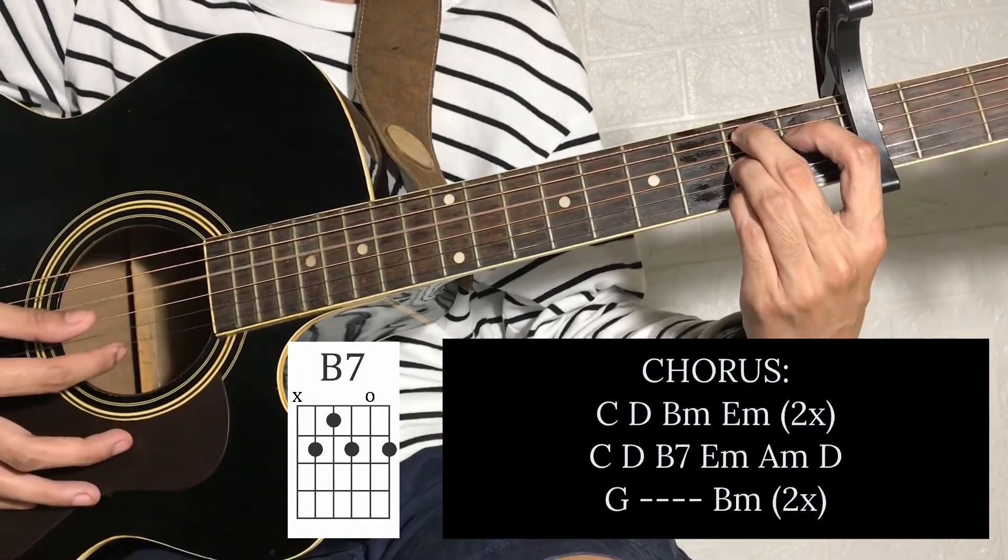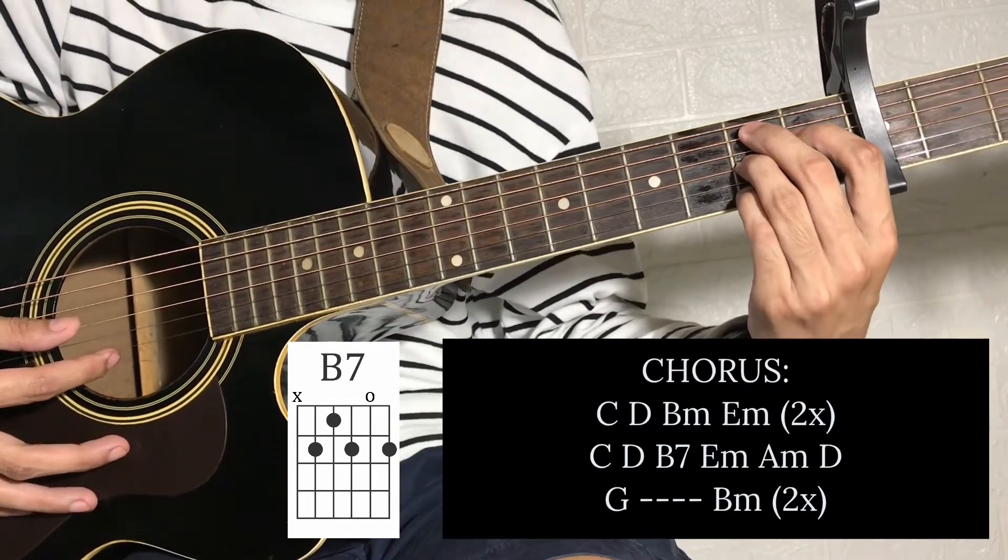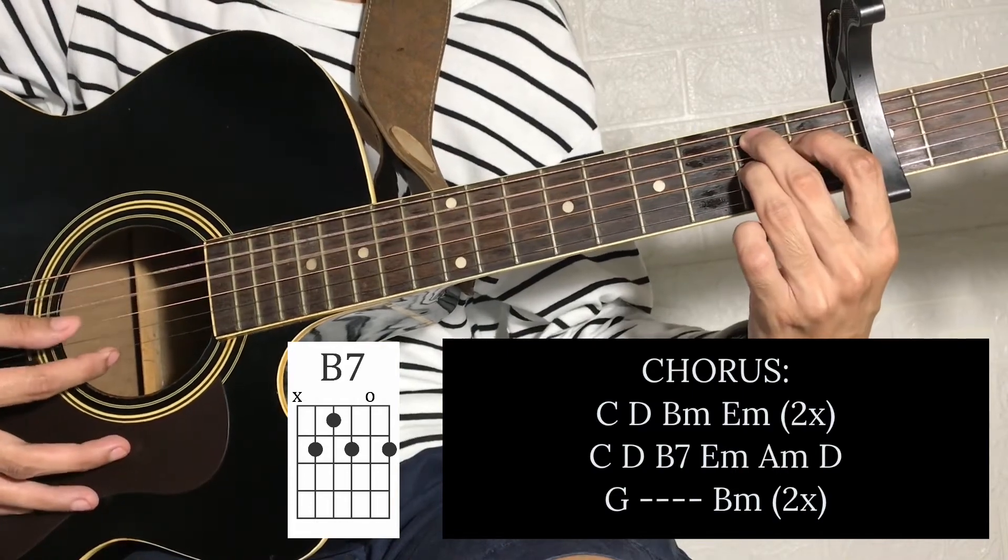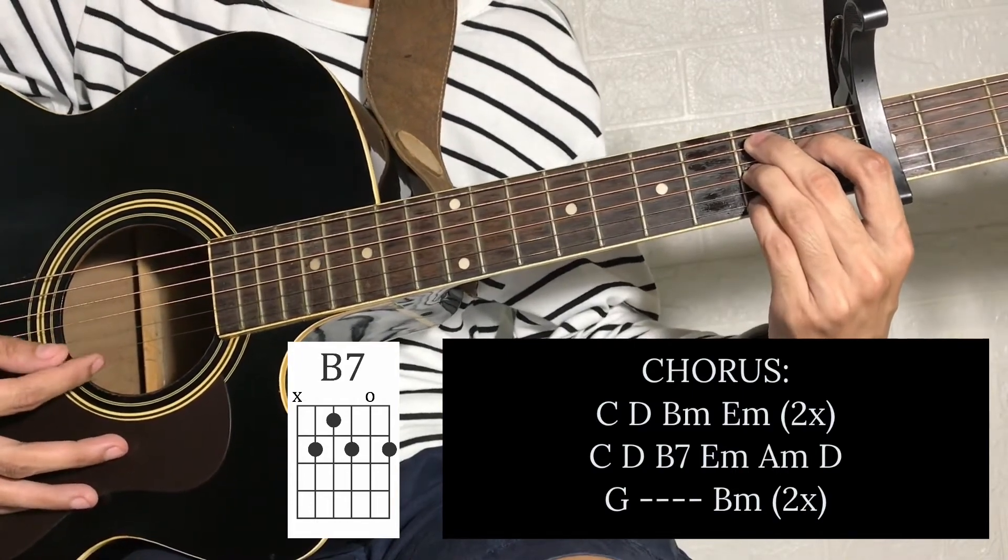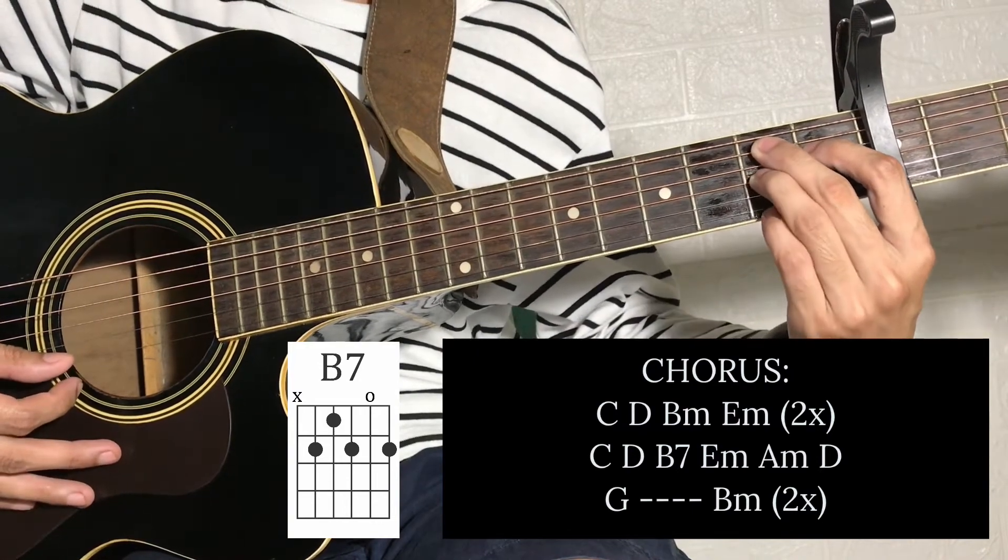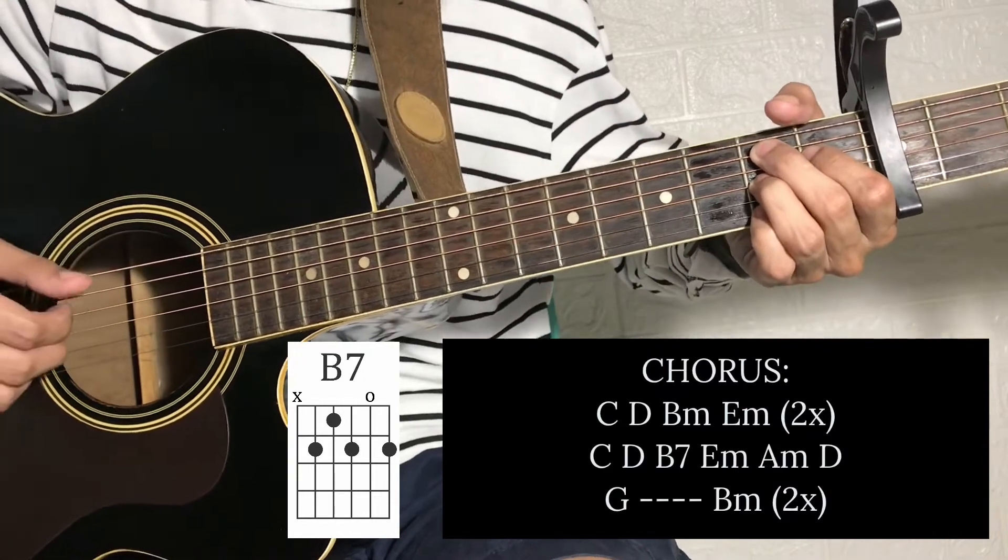Index finger nasa 1st fret 4th string. Then ring finger nasa 3rd string 2nd fret. Yung little finger mo nasa 2nd fret 1st string. That is your B7.